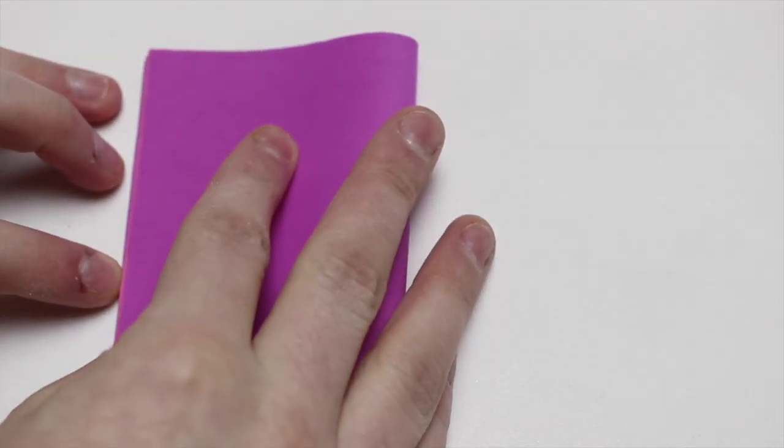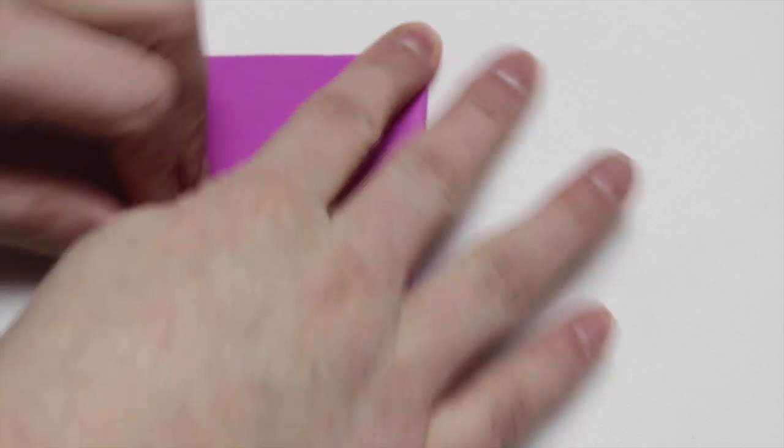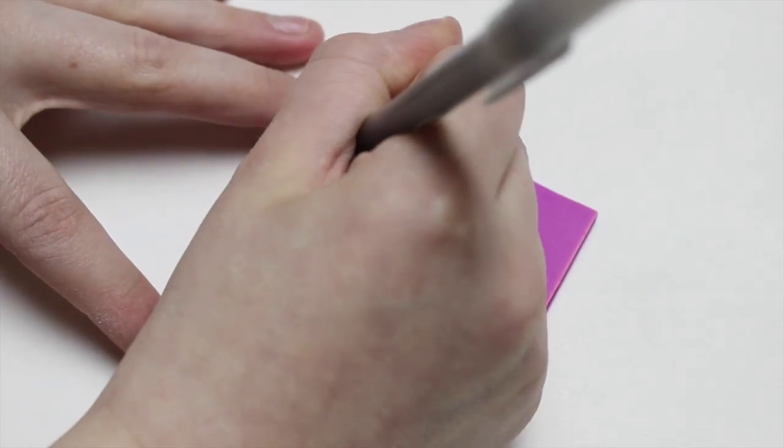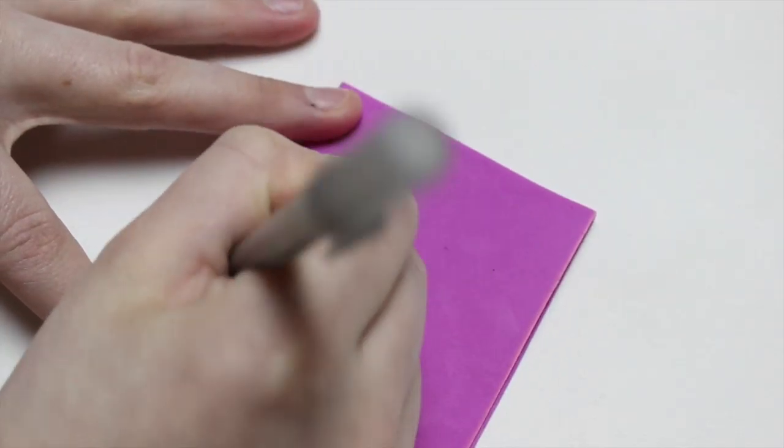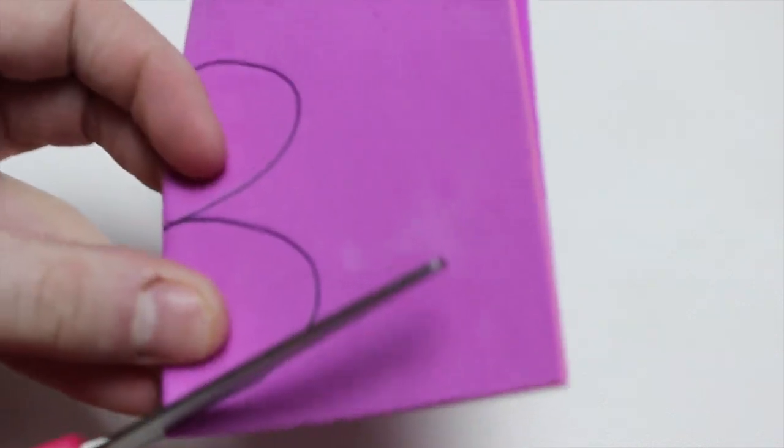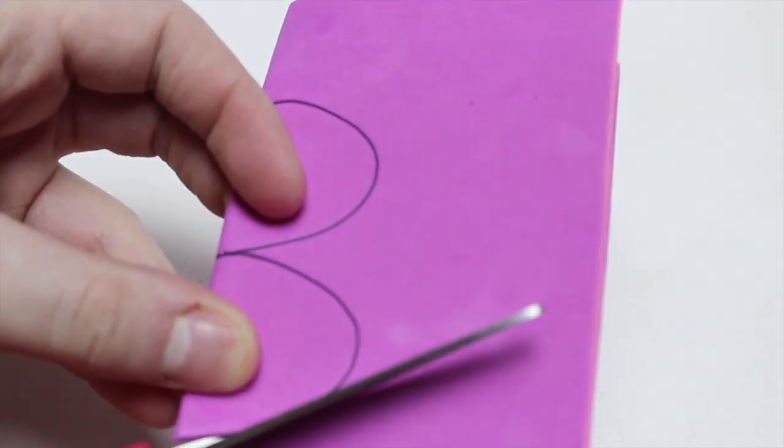To make the wings, fold the piece of pink foam paper in half. Then take a pen and make a big letter B where the crease of the foam paper is. Now take a pair of scissors and cut the B out and then cut the B in half.